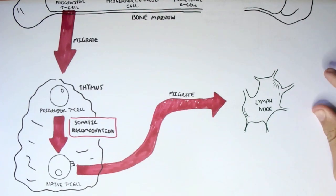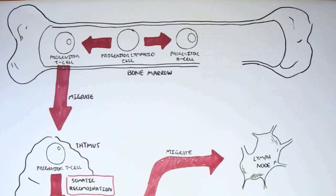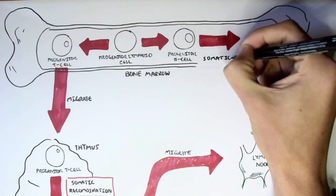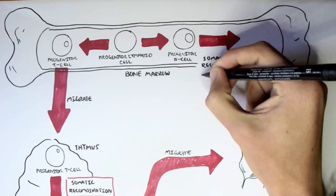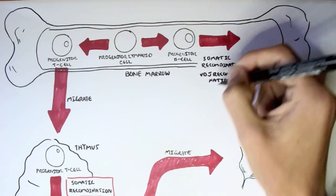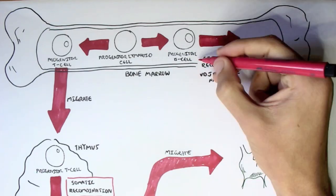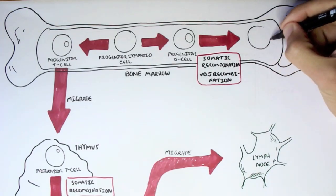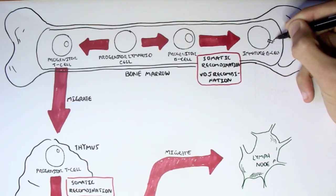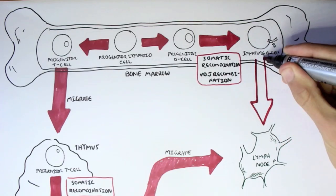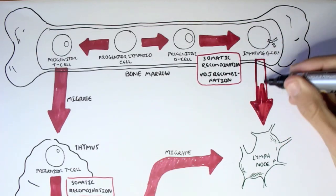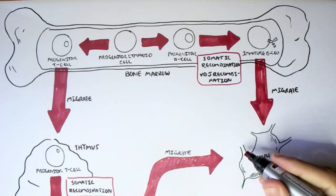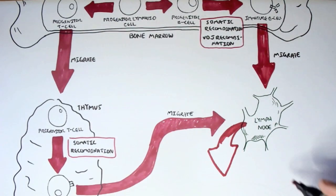Now let's go back to the progenitor B-cell. The progenitor B-cell will also undergo somatic recombination, also known as VDJ recombination, in the bone marrow. Through this recombination it will become an immature B-cell with a unique antibody which will bind to a specific antigen. Through somatic recombination it will obtain a unique type of antibody, usually immunoglobulin M.